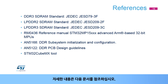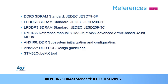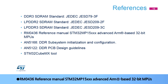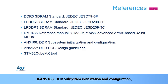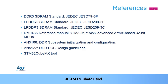For more details, you may refer to the following documents: DDR3 SDRAM Standard JEDEC JESD79-3F; LPDDR2 SDRAM Standard JEDEC JESD209-2F; LPDDR3 SDRAM Standard JEDEC JESD209-3C; RM0436 Reference Manual STM32MP15XXX Advanced ARM-Based 32-Bit MPUs; AN5168 DDR Subsystem Initialization and Configuration; AN5122 DDR PCB Design Guidelines; and the STM32CubeMX Tool.